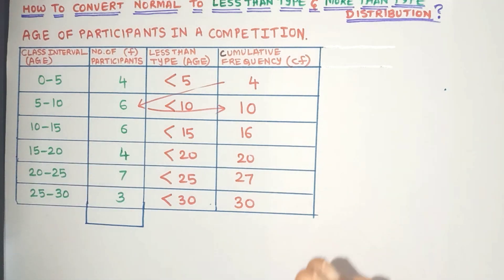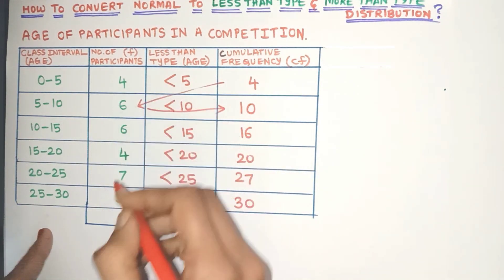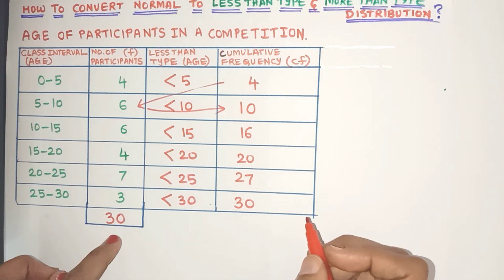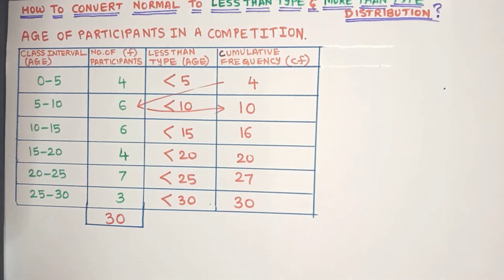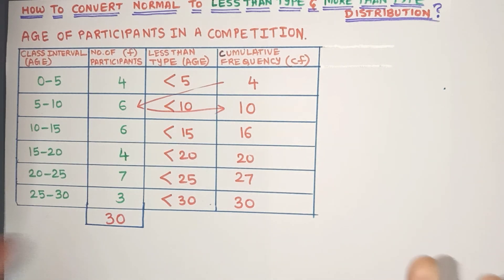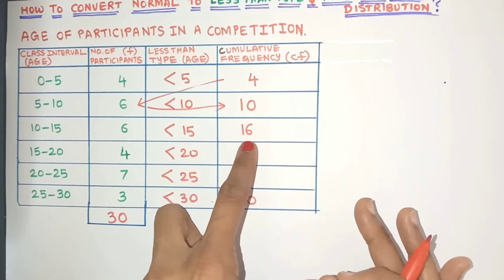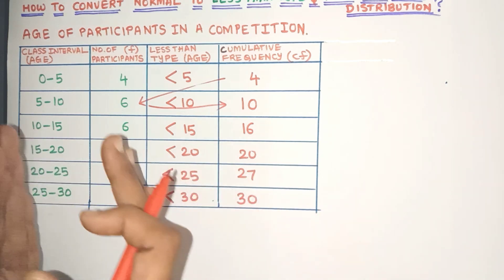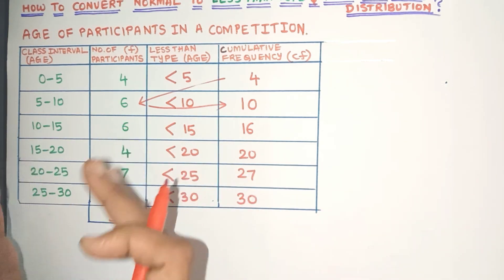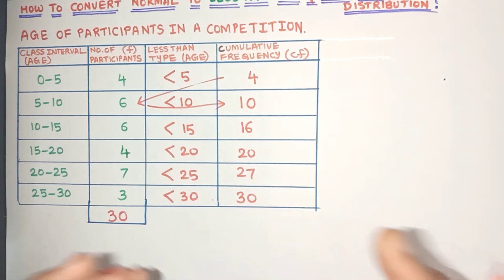Now to verify if we are on the right track, just find the total frequency value — that comes to 30. Since the total frequency is equal to the last CF value, it shows we are on the right track. Now suppose we want to know how many participants were less than 15 years of age — in one glance we know that 16 participants were less than 15 years of age. If it was the normal distribution, it would have taken us more time. So that's why this type of table is very useful.